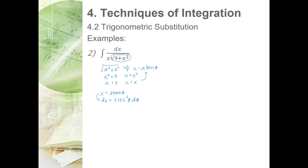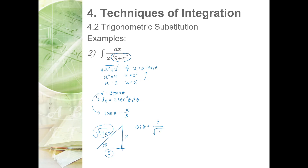Isolating gives tangent theta equals x over 3. Drawing the right triangle with opposite side x and adjacent side 3, the hypotenuse by the Pythagorean theorem is the square root of 9 plus x squared. Now pair the radical expression with the constant. Using cosine: cosine theta equals 3 over the square root of 9 plus x squared, which gives the square root of 9 plus x squared equals 3 secant theta.